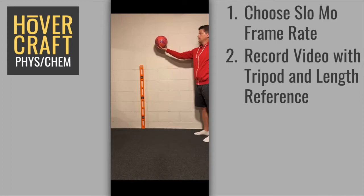Another important consideration is to include some sort of length reference in the video. Here, I've included a carpenter's level that I know to be 4 feet long. You could also use a meter stick if that's available. It's a good idea to use something with high contrast color because you'll need to trace out the length of this item when you do the video analysis. The length reference item is used to scale the video and will affect all of your measurements. The length reference does not necessarily have to be placed vertical or horizontal in the video.